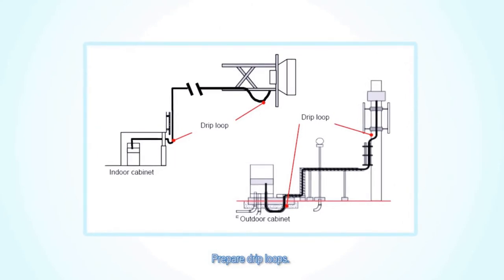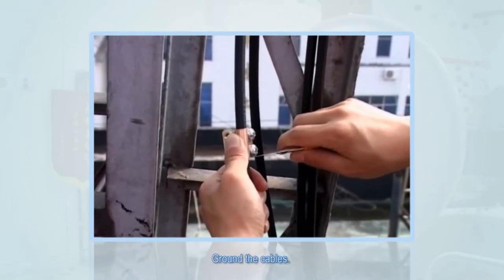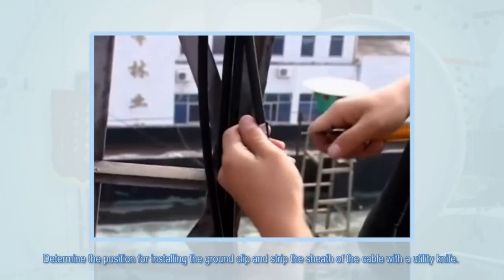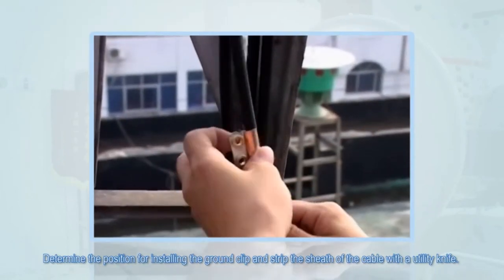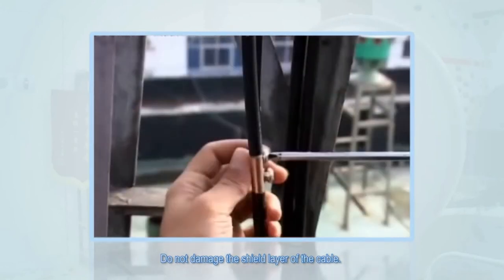Prepare drip loops. Ground the cables. Determine the position for installing the ground clip and strip the sheath of the cable with the utility knife. Do not damage the shield layer of the cable.